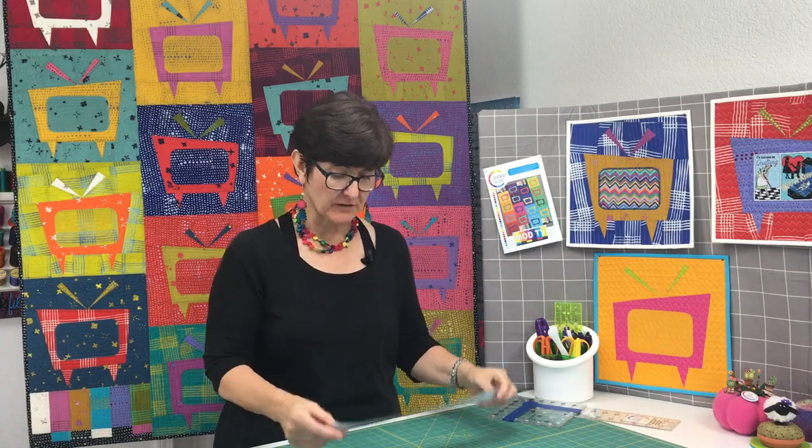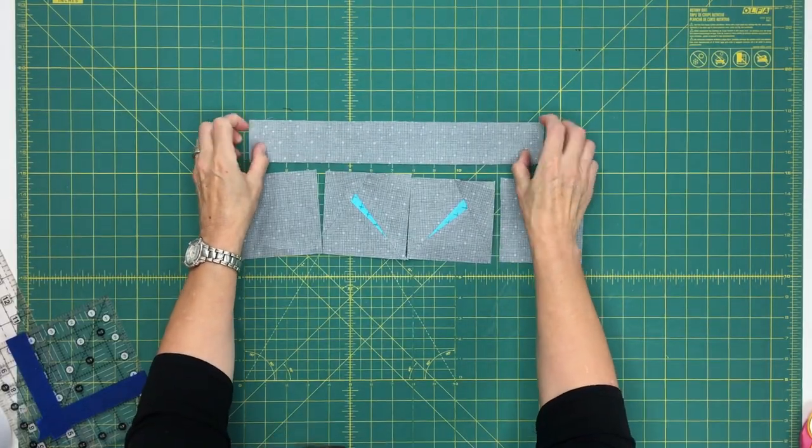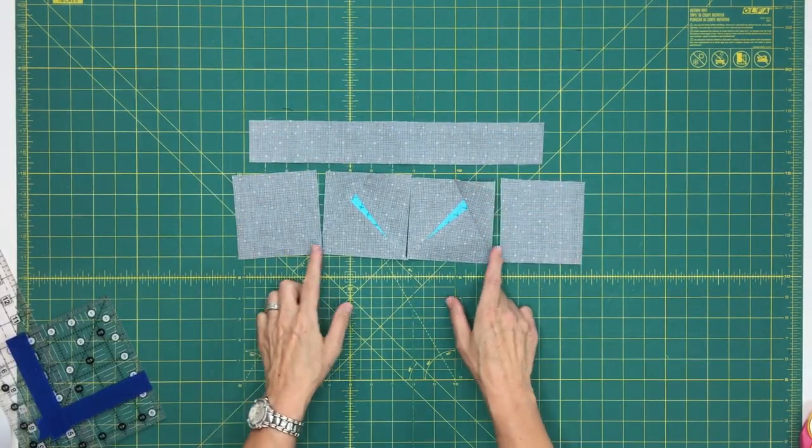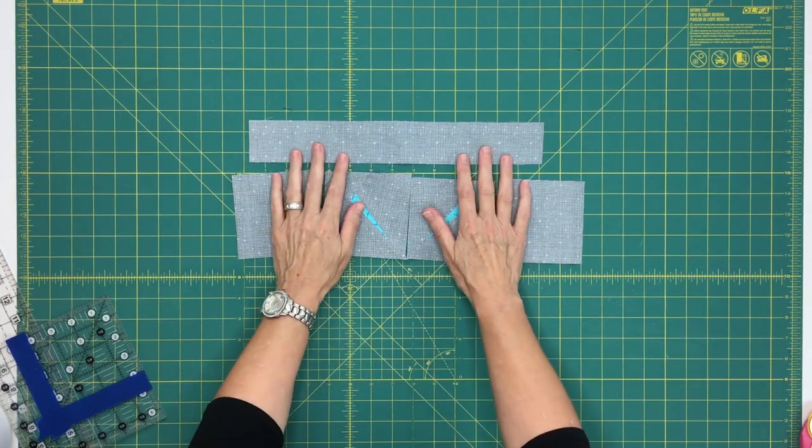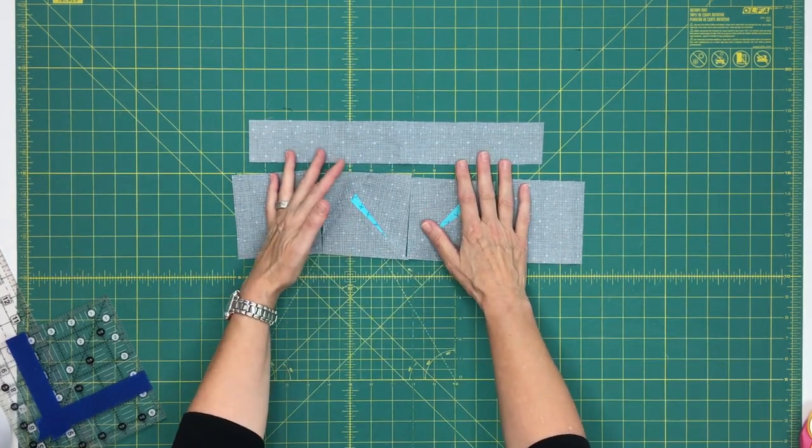So I'm back and I've got all my antenna blocks put together and I'm ready to put the entire antenna strip together in units. I have four units to put together. I'm also going to add my filler strip, which is the part that will go on top of the entire Mod TV block here. So I'm going to sew the units together first, then the strip goes on, and I'll be back in just a minute.